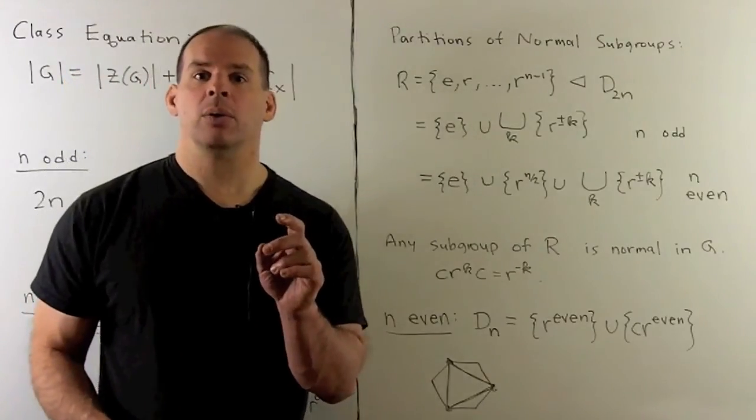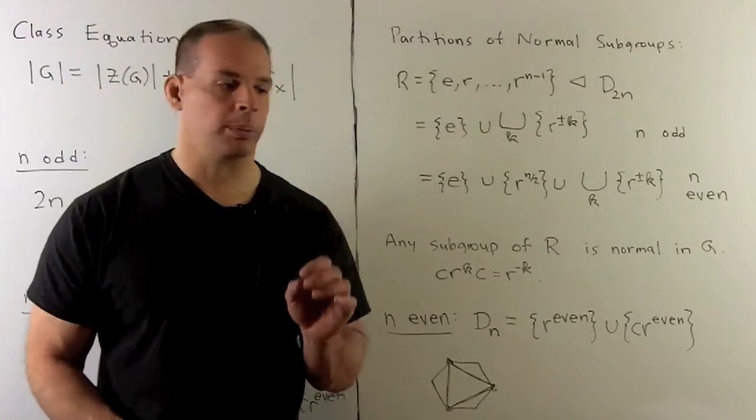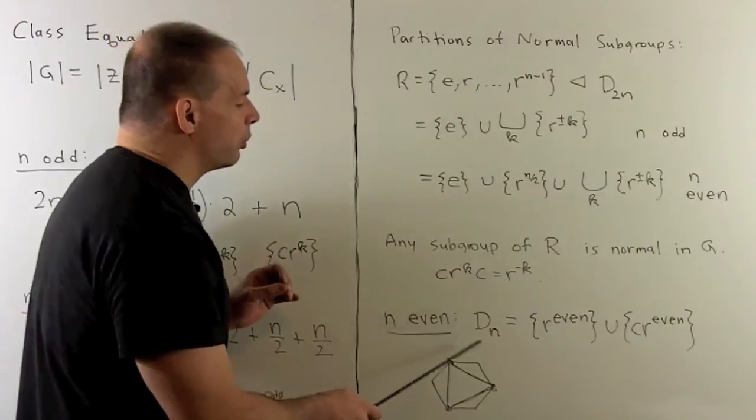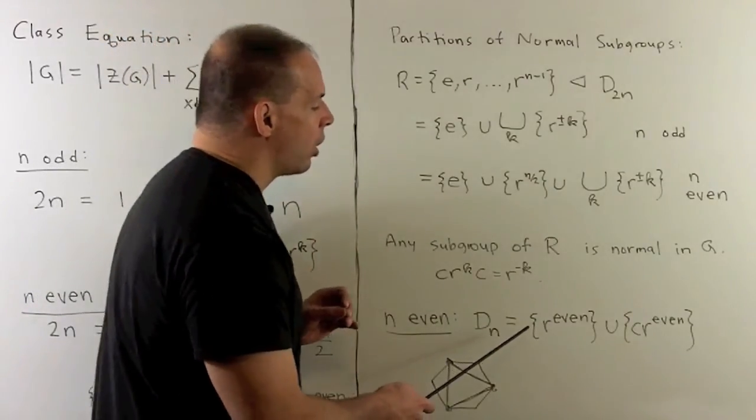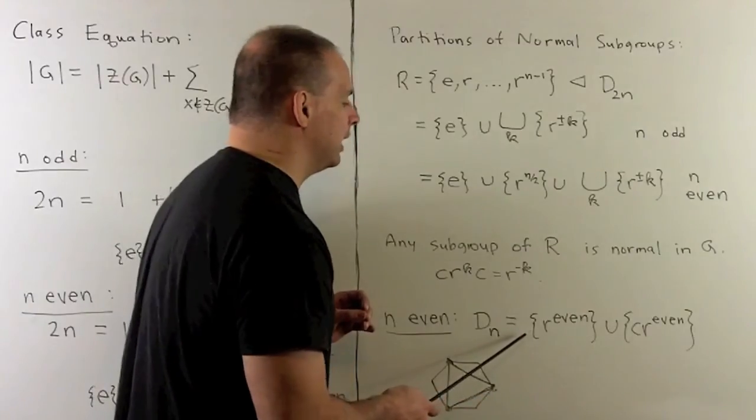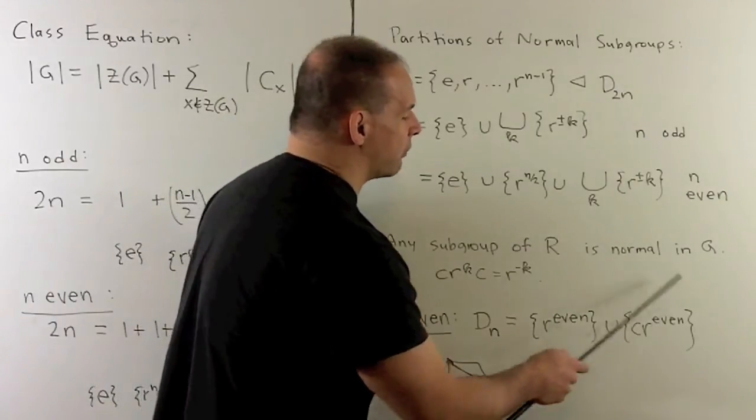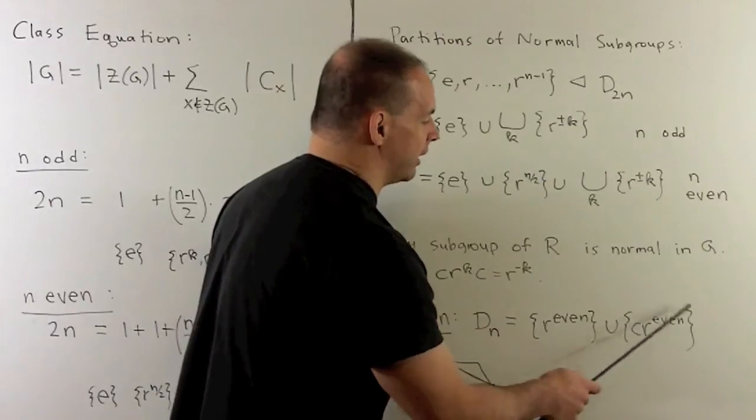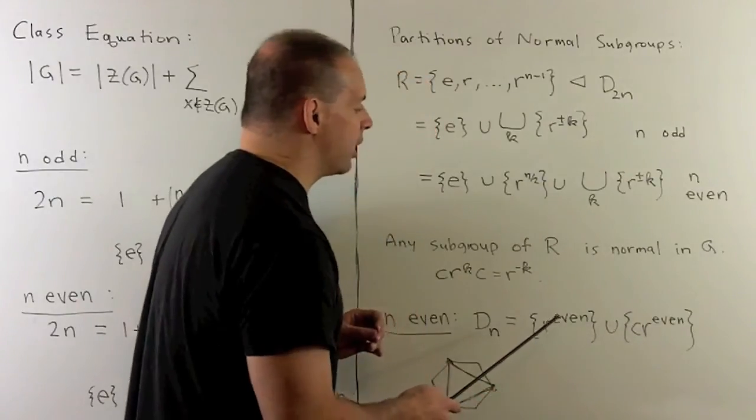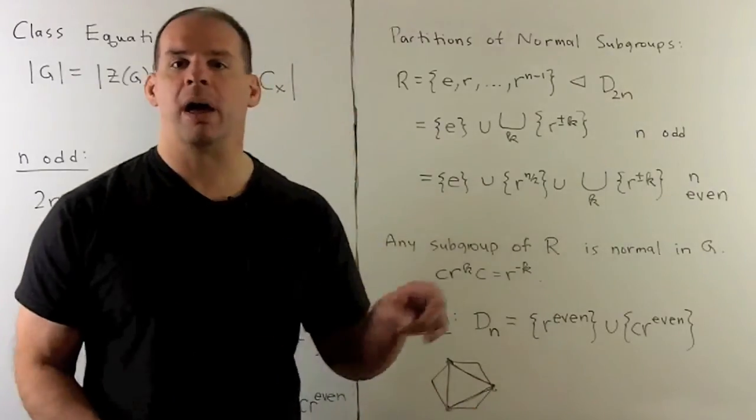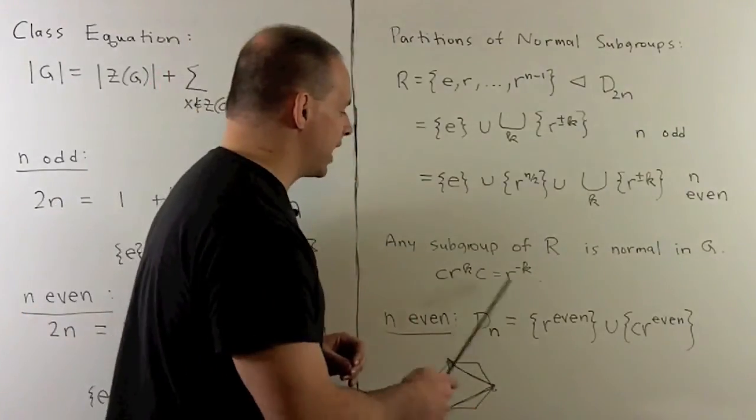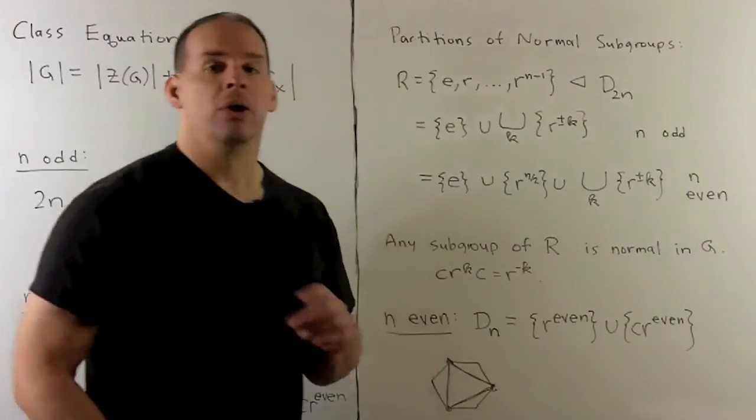When n is even, we also have another interesting subgroup. We have subgroup isomorphic to D sub n. What we do is, we're going to take all rotations with even exponents, and then we're going to take the class of reflections corresponding to the even exponent. You see here, if I multiply any two elements from either one of these together, we wind up back into the set.